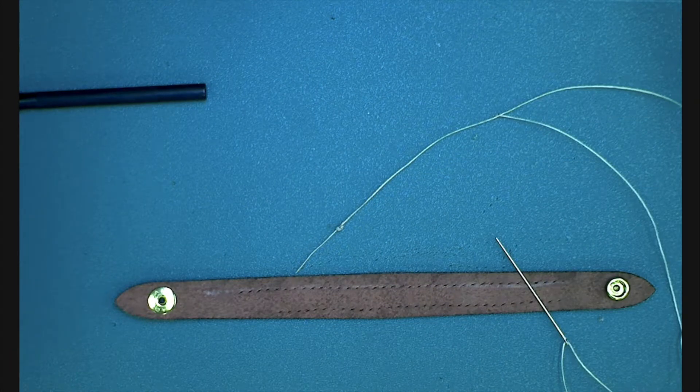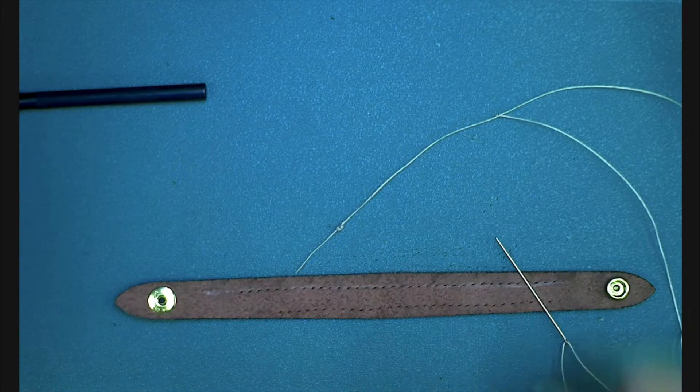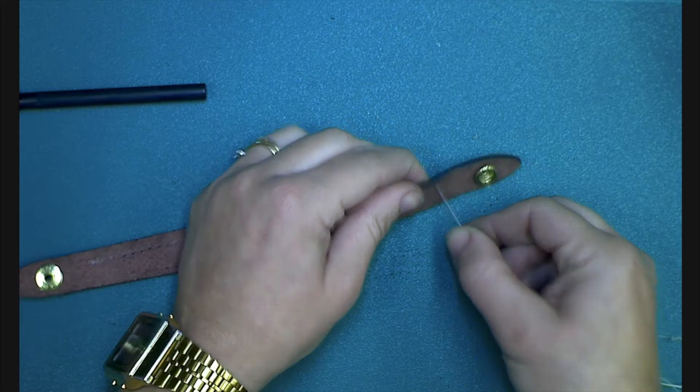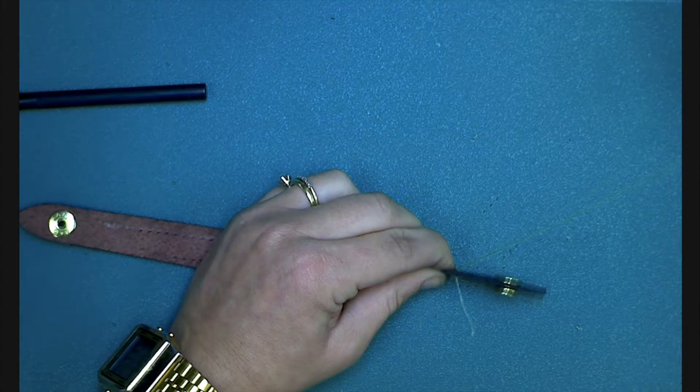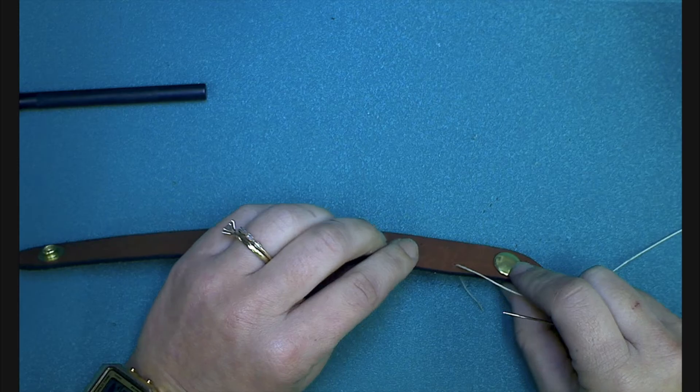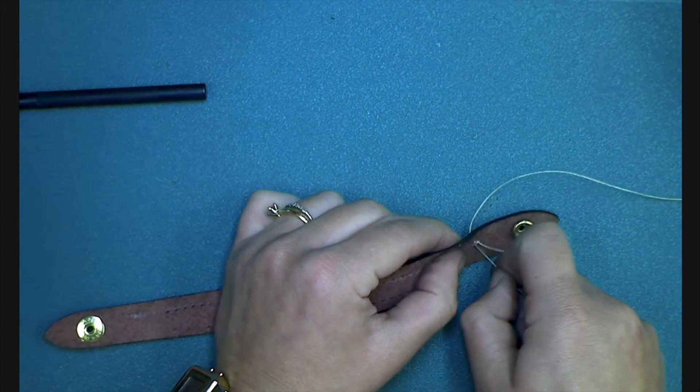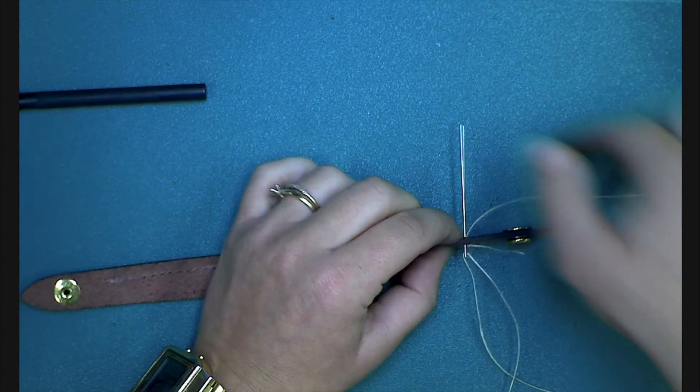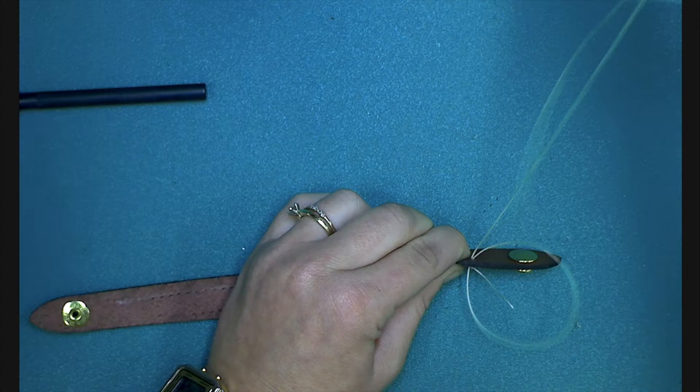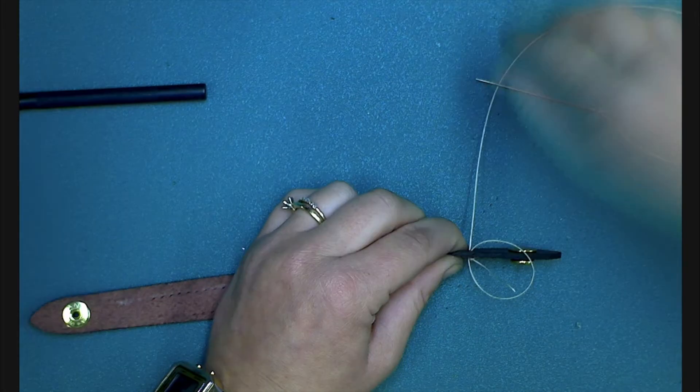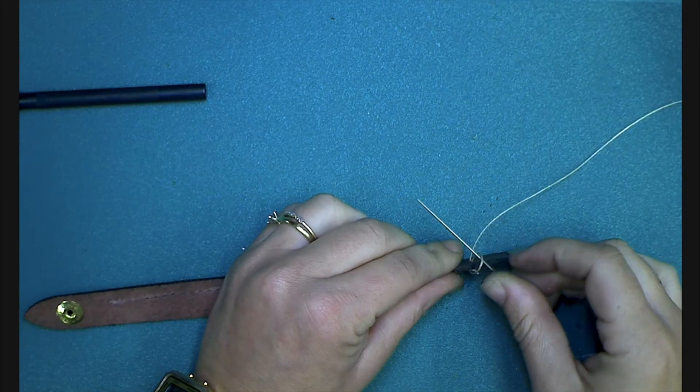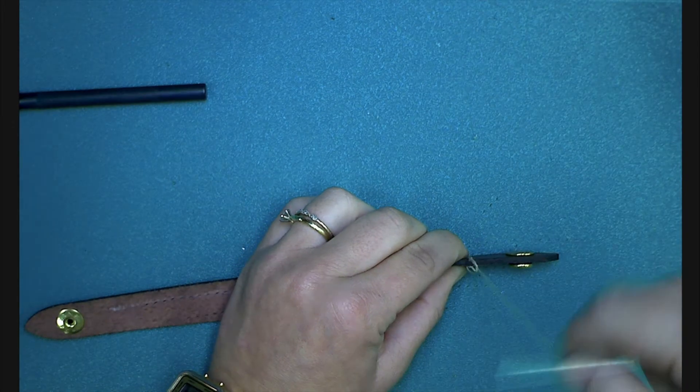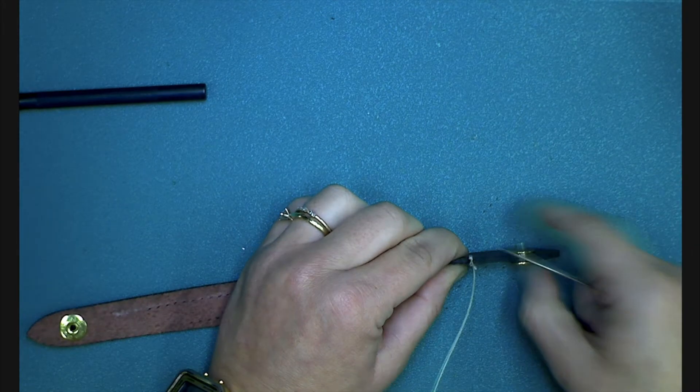Now you're going to start your stitches on the reverse side of the leather. Thread through the first hole and then go back through the same hole again. This creates a loop. Before you pull the loop tight, pause. Thread the needle from right to left through the loop. Pull it tight. This starts your stitching.